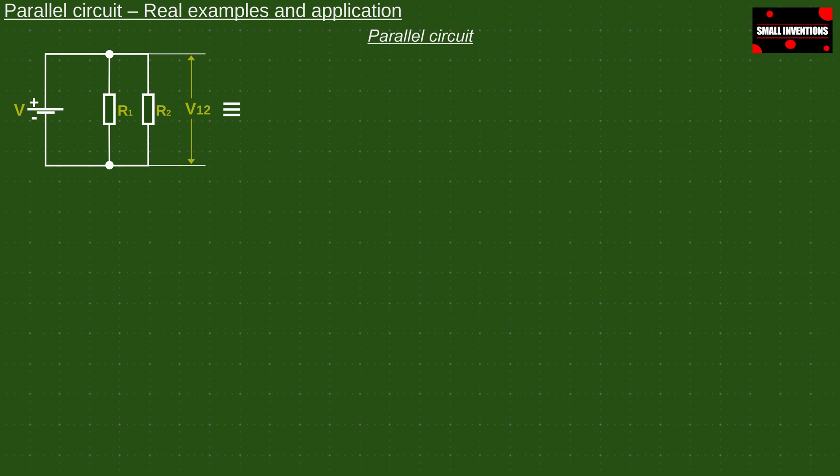As with a serial circuit, we can also simplify a parallel circuit. In this case, we calculate the total resistance according to the equation. This equation is used only for two parallel resistors.